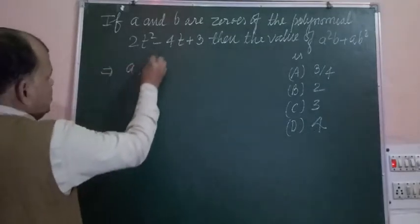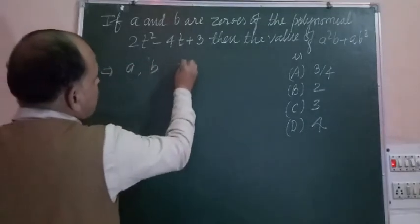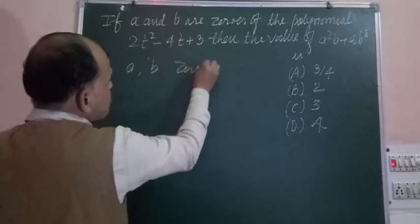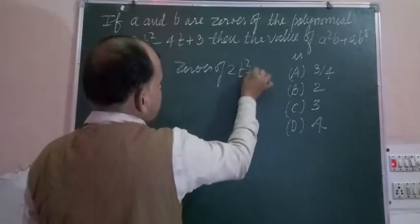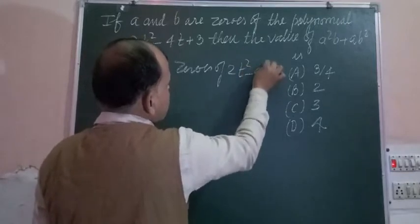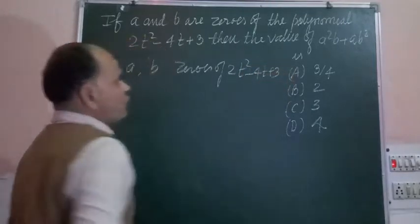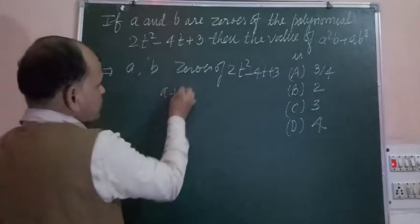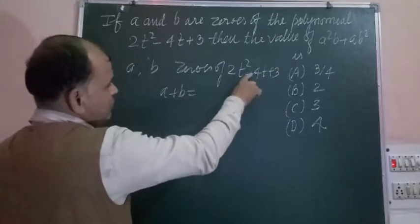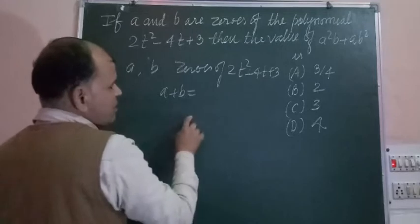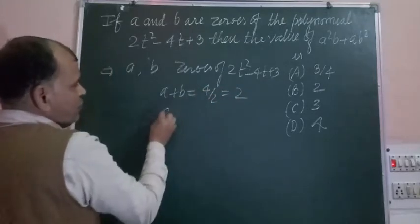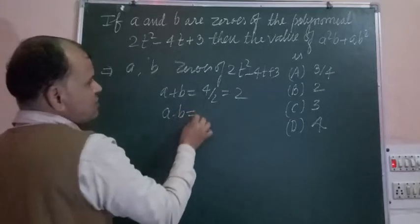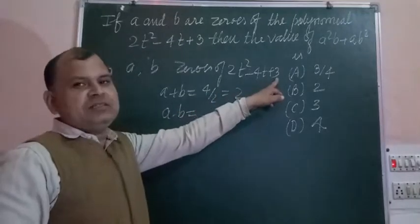If you write here A and B are the zeros of 2T² - 4T + 3, and you know that sum of zeros A + B equals -B/A, so -B is -4, this will become 4/2, so this is 2. And product of zeros is C/A, here C is 3 and A is 2, so this is 3/2.